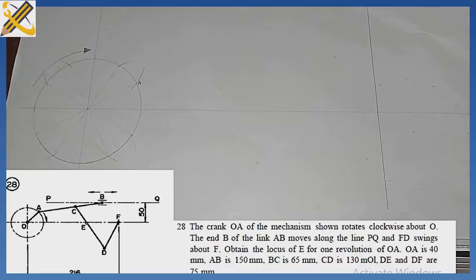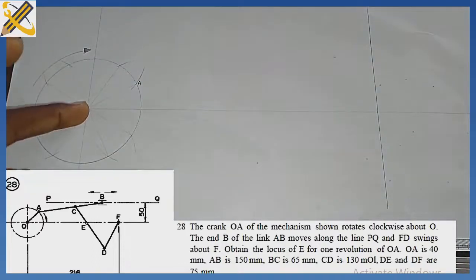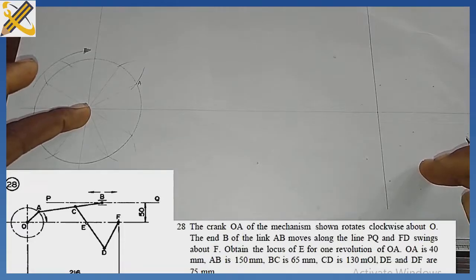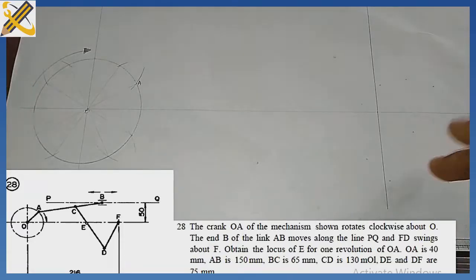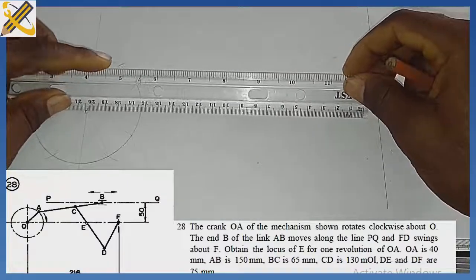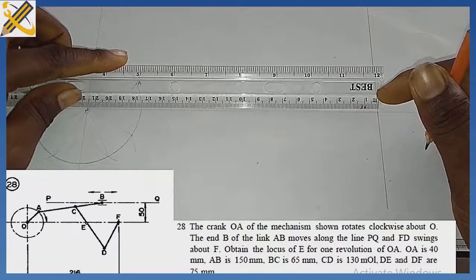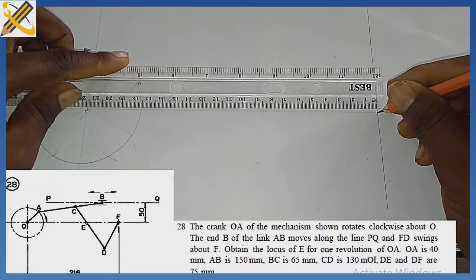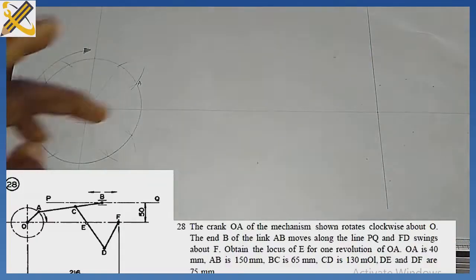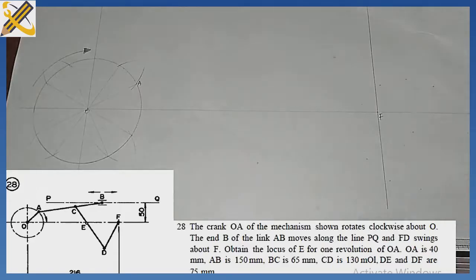The next thing is to get the distance from point O to point F, which is 216. With your ruler, mark 216. Point O is here, so from O, I rule vertically to point F — that's 216 up here.